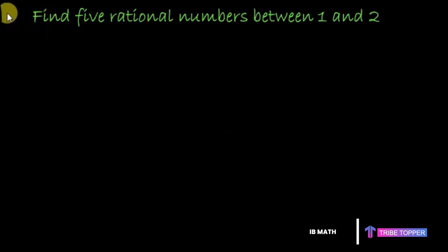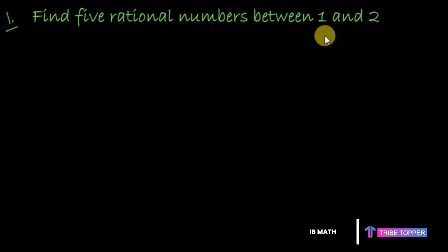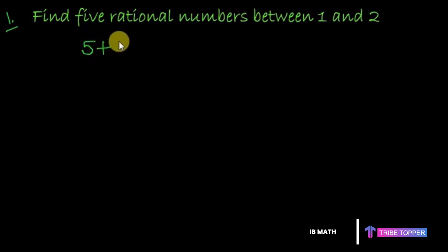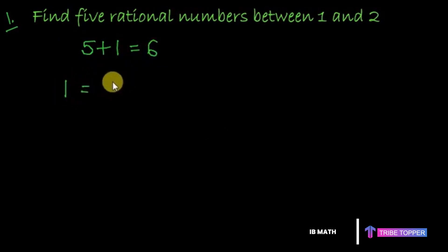First question: find five rational numbers between one and two. Since our question demands five rational numbers, I would prefer to express one and two in terms of ratios with six as the denominator. My requirement is five rational numbers, so I want the denominator to be one more than five, that is six. So I can express one as six upon six.